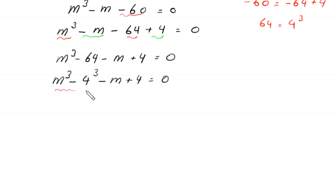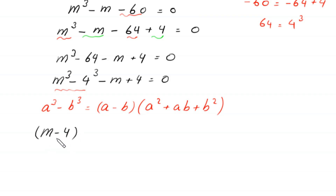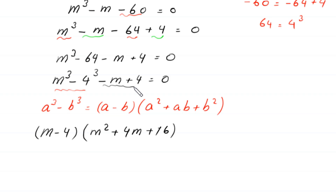We have a difference of cubes. Using the identity a cubed minus b cubed equals (a minus b)(a squared plus ab plus b squared), the term m cubed minus 4 cubed becomes (m minus 4)(m squared plus 4m plus 16).